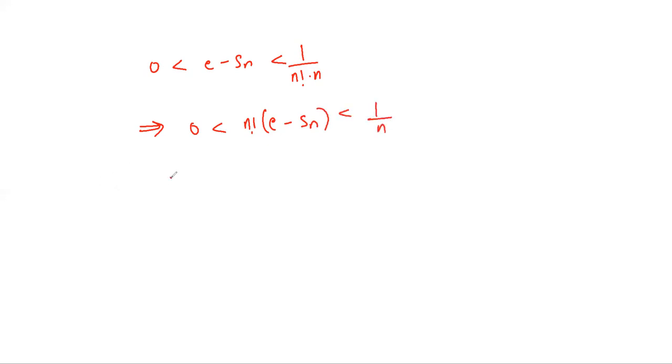Now we take n equals Q, which implies 0 is less than q factorial times E minus Sq is less than 1 over q.